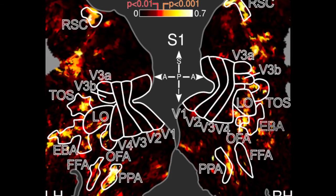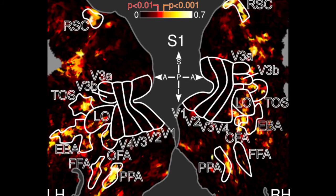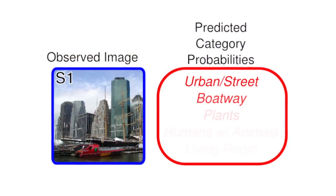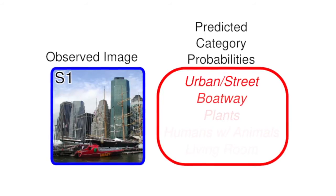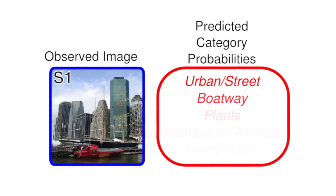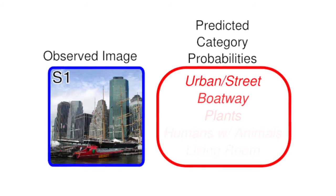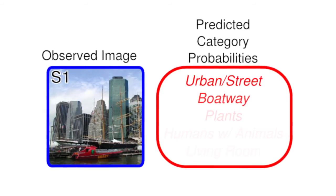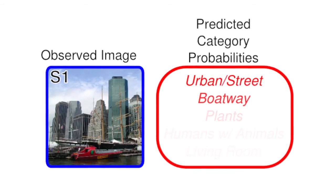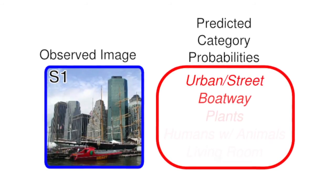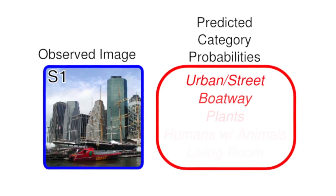One nice application of this approach is that we can use the same modeling framework to decode brain activity. Essentially, we use the same raw data but run the regression analysis in the opposite direction, trying to predict scene categories from evoked brain activity. What results is a decoder that can predict the scene category of a novel scene from the activity evoked by that scene. Here we show a few examples of the decoder. On the left is a scene that was viewed by one subject. The most likely scene categories decoded from the brain activity are shown on the right, where saturation of each label indicates the decoded probability that the viewed scene belongs to the corresponding category. The decoder indicates that the viewed scene was a member of the urban or boatway categories — an accurate description of the scene.